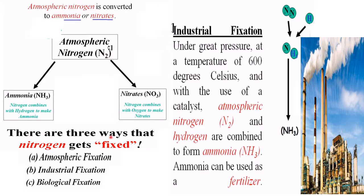There are three ways to fix nitrogen: one is atmospheric fixation, another is industrial fixation, and the third is biological fixation. In the case of industrial fixation, under great pressure at a temperature of 600 degrees Celsius and with the use of a catalyst, atmospheric nitrogen and hydrogen are combined to form ammonia. This ammonia can be used as a fertilizer.